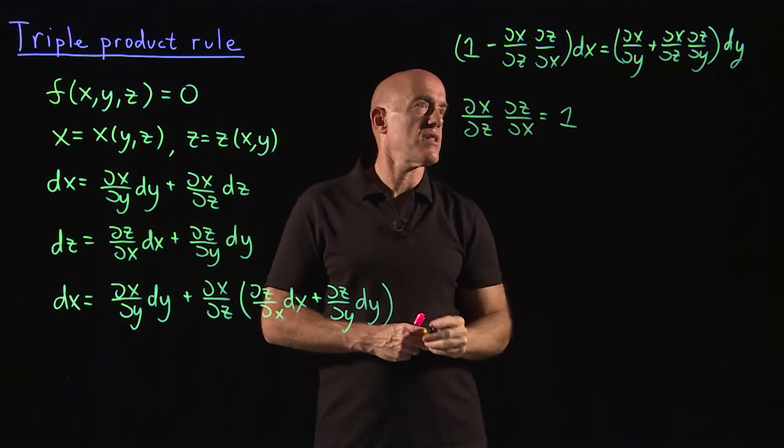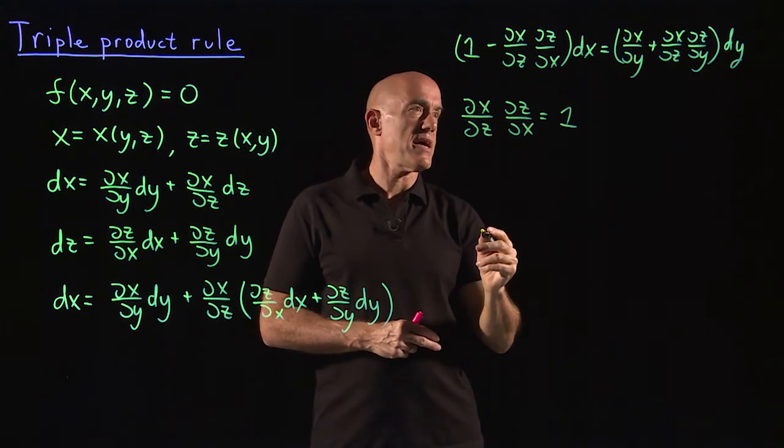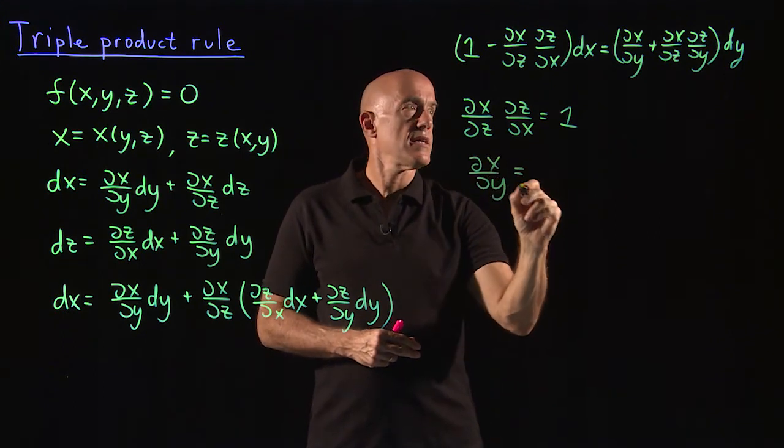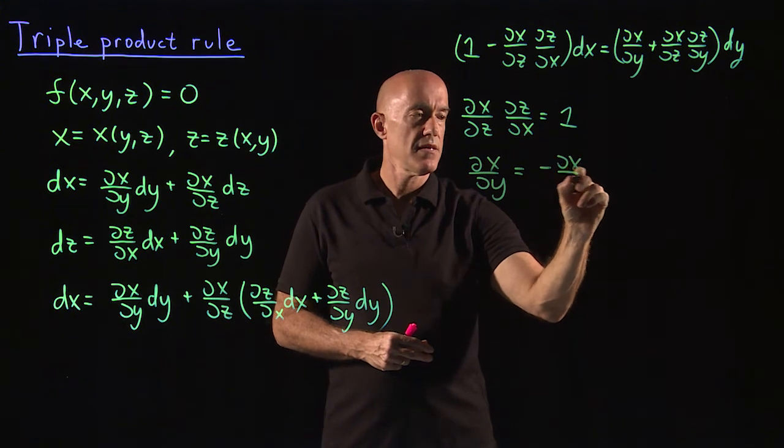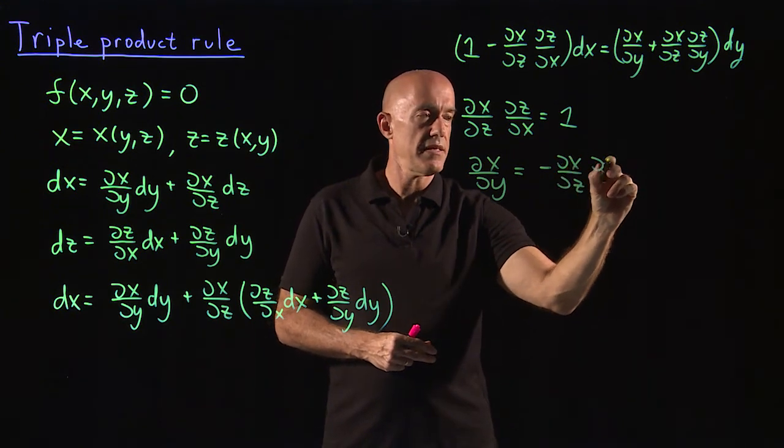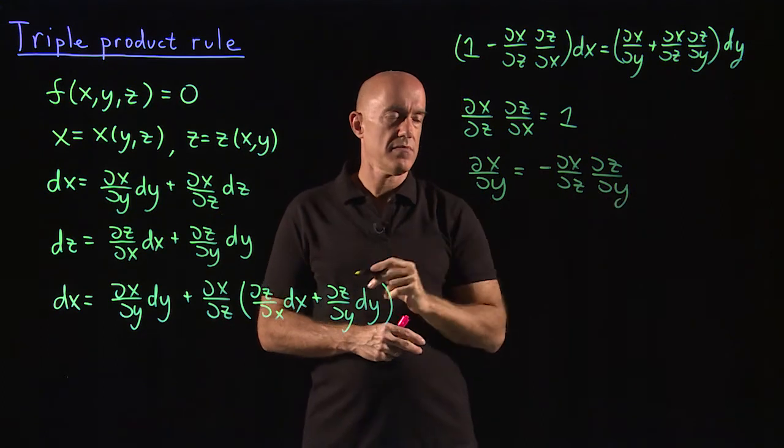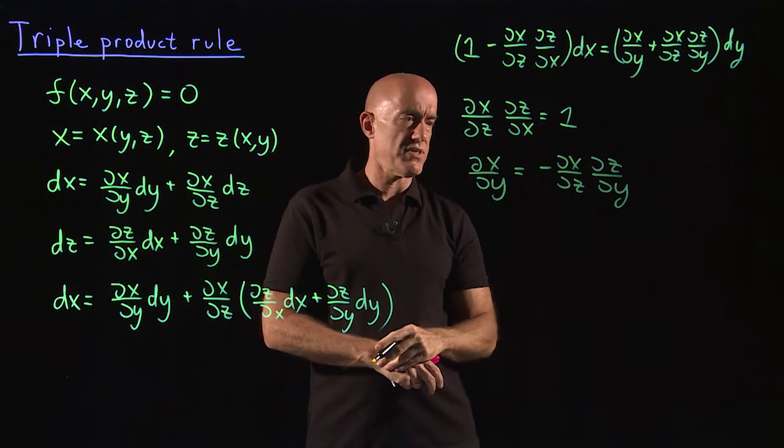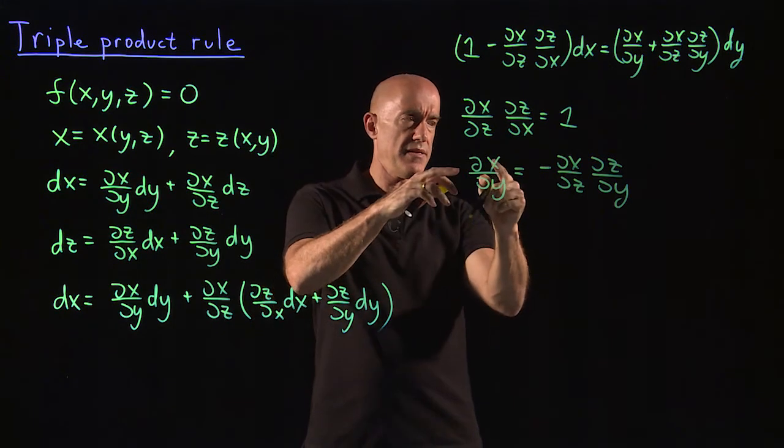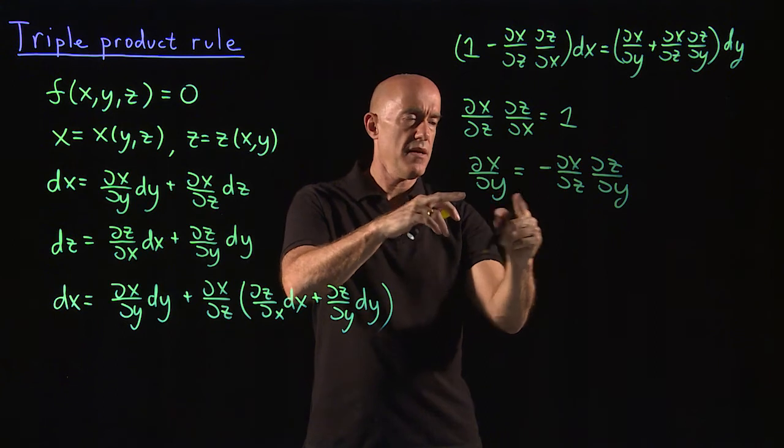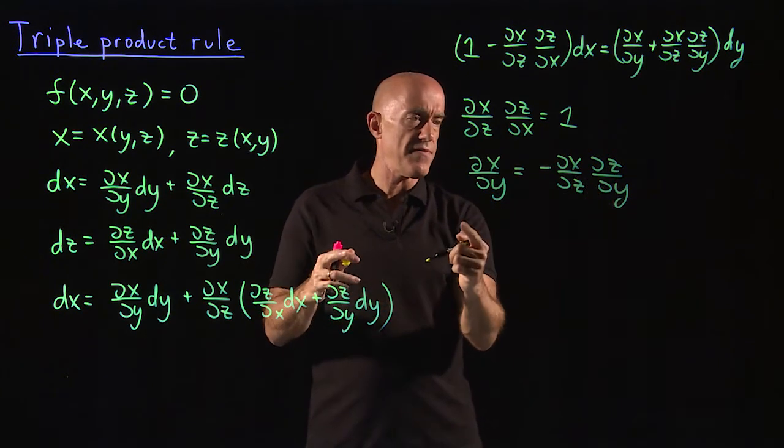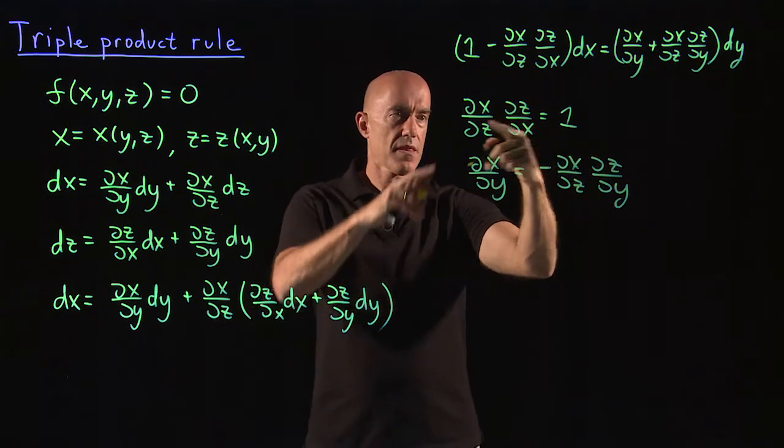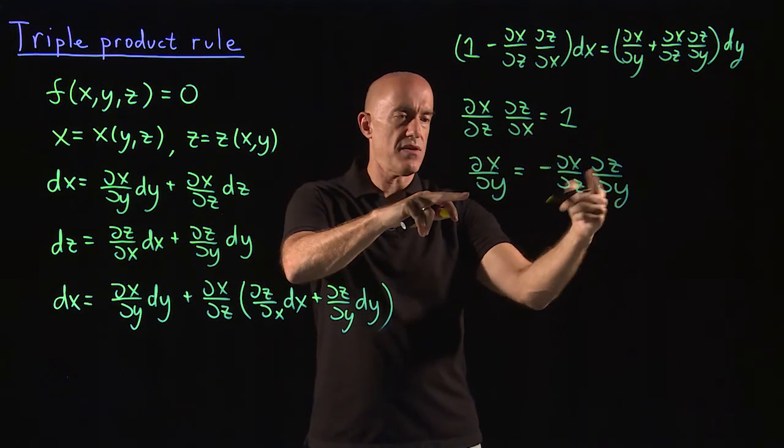What about the second relationship? The second relationship says dx dy is equal to minus dx dz, dz dy, okay? But let's put everything on the same side. So we have a dx dy. To put the dz dy on the left, we can use this first identity and take the reciprocal.